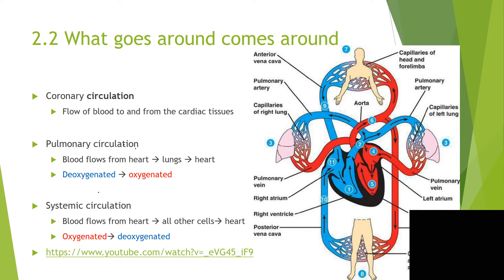Here we see a picture of the entire circulatory system, with all the places numbered. Number one is in the right ventricle. First we start with the pulmonary circulation. In the pulmonary circulation, blood flows from the right ventricle through the pulmonary artery to the lungs to pick up oxygen. It then flows back to the heart through the pulmonary veins, where the blood enters at the left atrium.